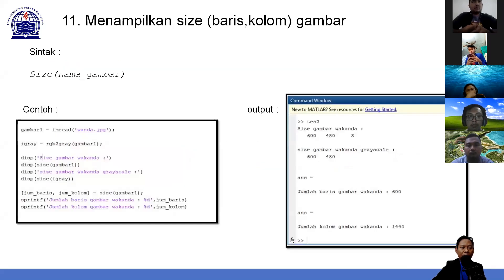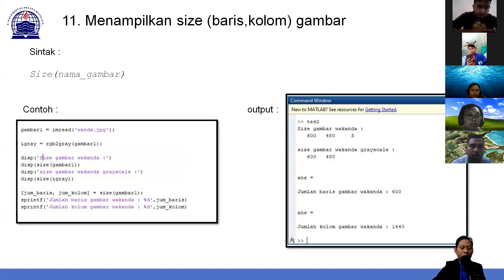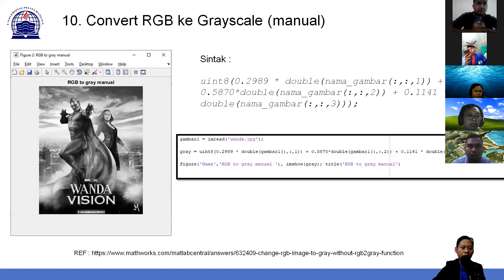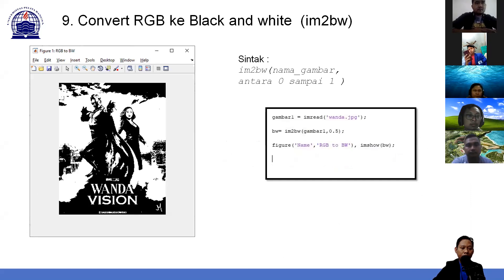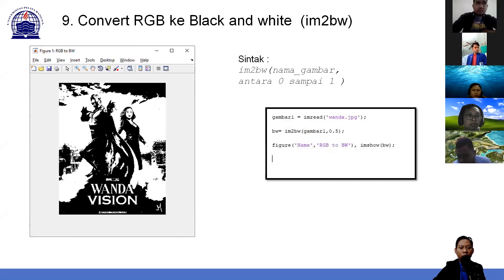Selanjutnya untuk black and white bagaimana? Untuk black and white saya tidak kasih contoh sintaknya karena itu bagian dari tugas. Saya cuma kasih logikanya. Logikanya: setiap piksel gambar normal RGB mempunyai nilai antara 0 sampai 255. Bagaimana meng-convert agar menjadi 0 dan 1? Logikanya sangat mudah: kita tentukan dulu nilai batasannya, istilahnya threshold.